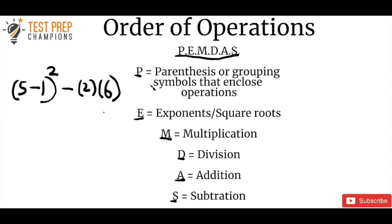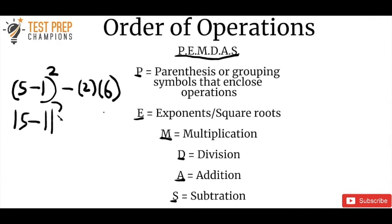These rules tell us the order to do the operations in when we go from left to right on a math problem. The P is for parentheses or grouping symbols that enclose operations. It could also be absolute value — those little bars — and you would treat that the same as parentheses.